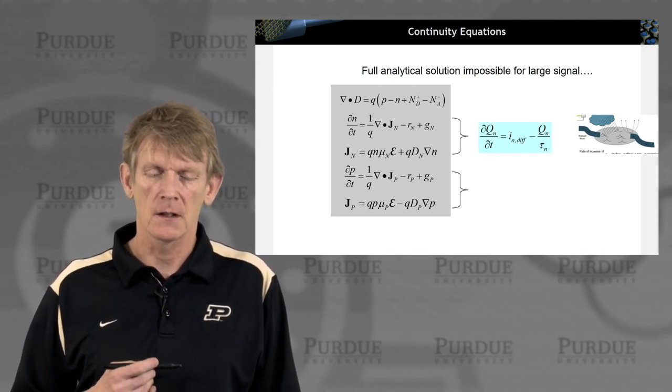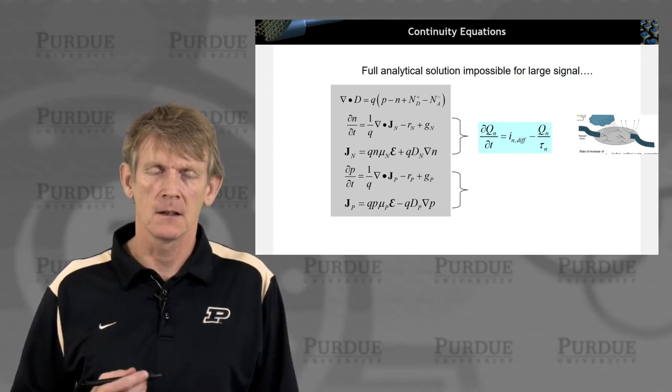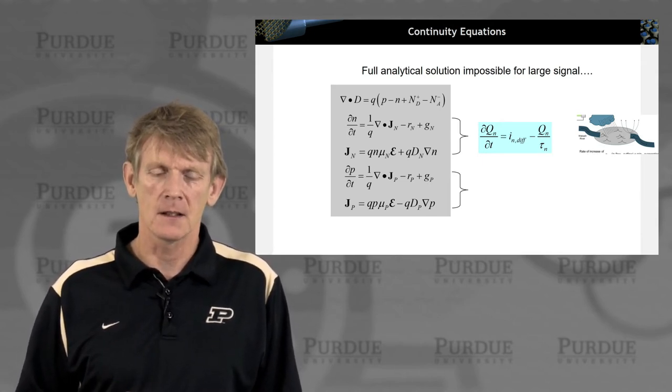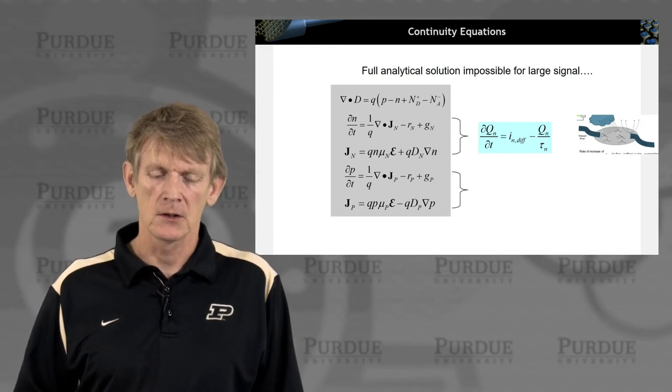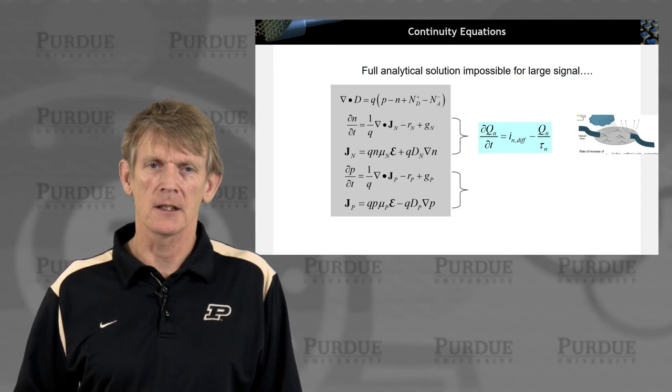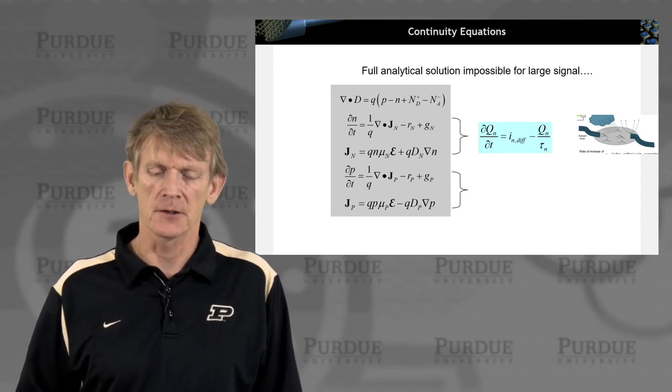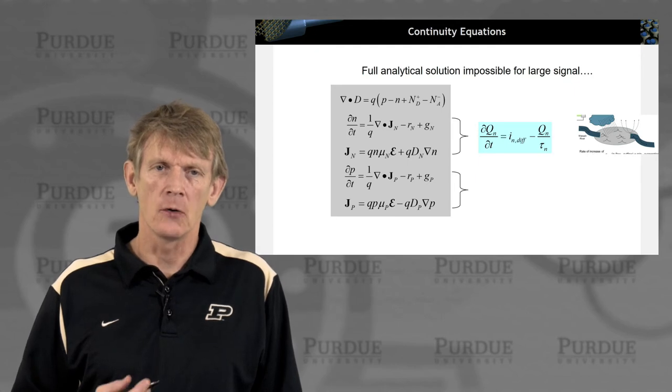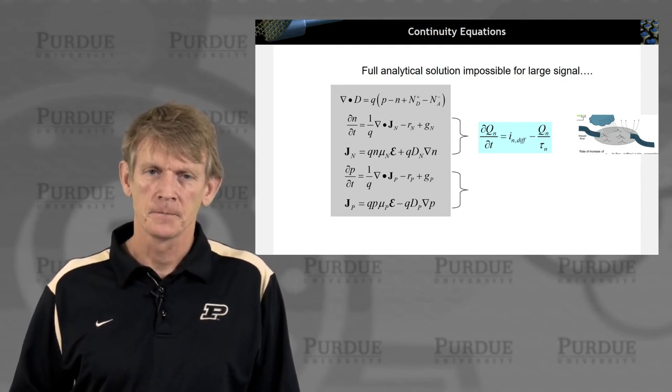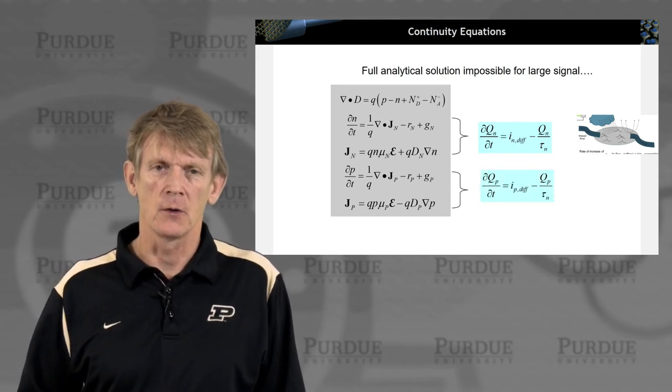And what is being introduced is something called this charge control model. So rather than dealing with the overall electron distribution in a significant amount of detail, what you do is you lump up the electron charge that is on the minority carrier side, and lump it up in, say, an electron charge, and look at the overall charge that is in your capacitive element, like this lake. And you do the same for the holes.